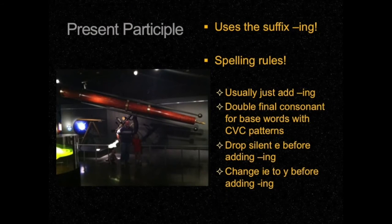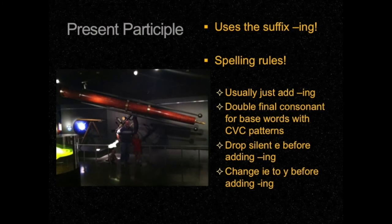The present participle form of the verb is the form of the verb that uses the suffix -ing. It's always this form of the verb, and so the only thing you really need to remember are the spelling rules. The spelling rules are listed for you here on the screen, and they are all things you should know from previous years of study.